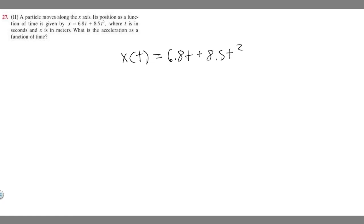In order to find acceleration as a function of time, you need to take the second derivative of this function. Because the first derivative of a position function is velocity, and the derivative of velocity is acceleration.